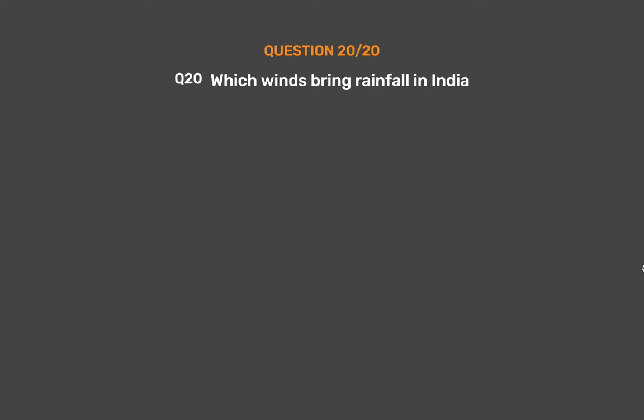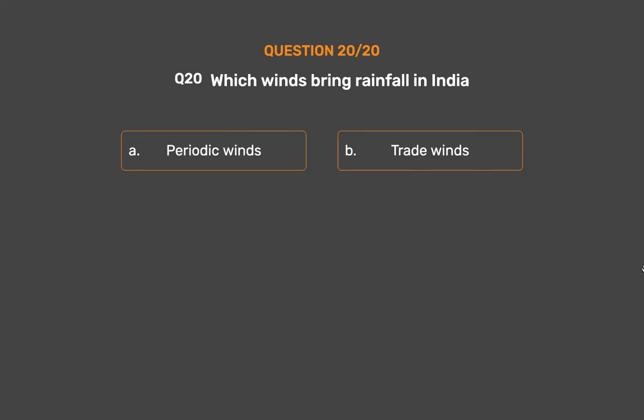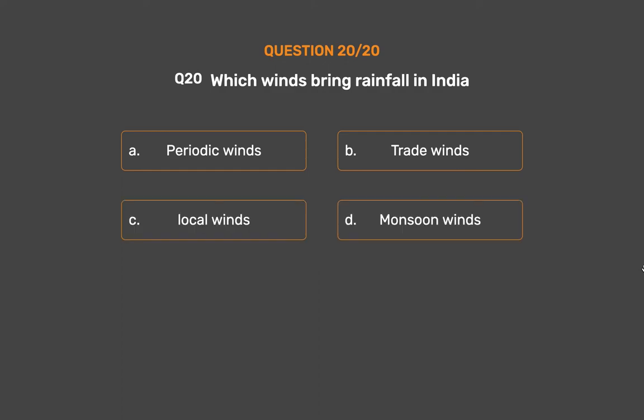Question No. 20: Which winds bring rainfall in India? Option A: Periodic winds, Option B: Trade winds, Option C: Local winds, Option D: Monsoon winds.